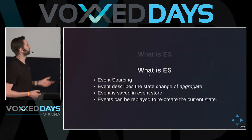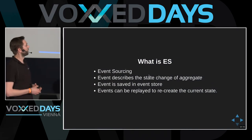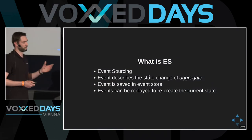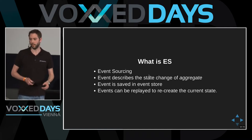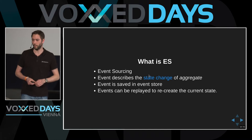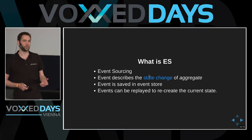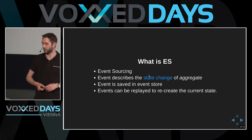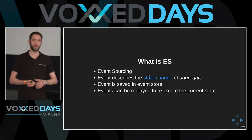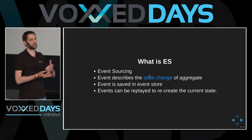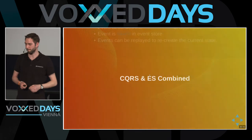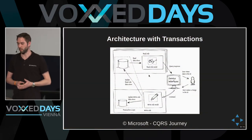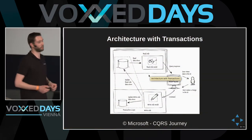A little bit about event sourcing: the event describes the state change of the aggregate, and that is persisted in the event store. You can replay all these events to get to the current state. You can already see it's tightly coupled to CQRS — the concept of event sourcing. When you combine them, you get an architecture like this.